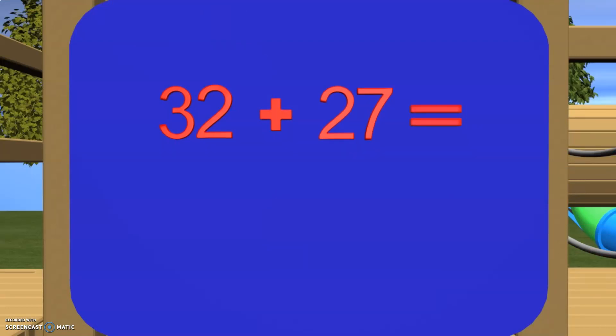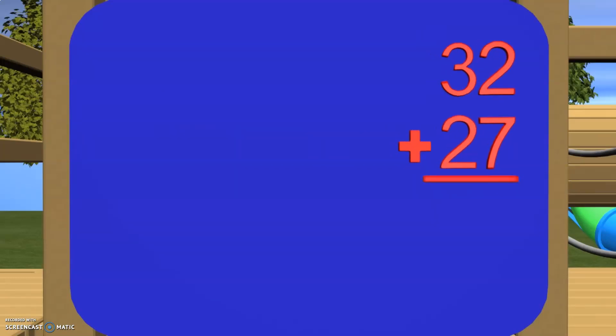So we are going to add 32 plus 27. We have double digit numbers here and a really cool way to add these together is to use our knowledge of place value. Let's set up these numbers differently so we can see the place value for each number. Looking at 32, the 3 is in the tens place and the 2 is in the ones place. Looking at 27, the 2 is in the tens place and the 7 is in the ones place. So do we have them lined up correctly?